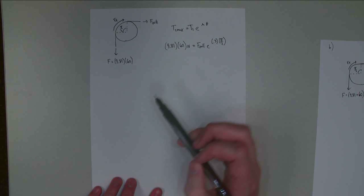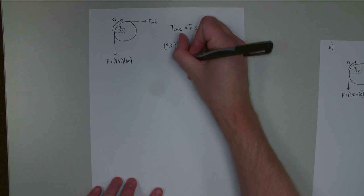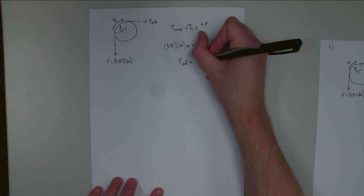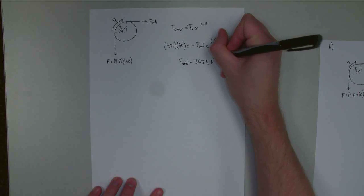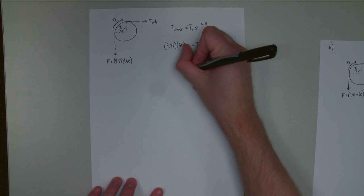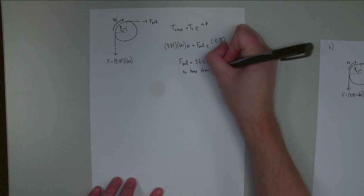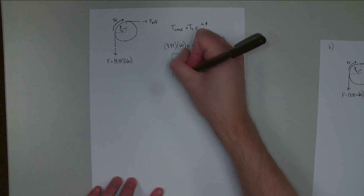Now we need to solve for F pull. Much of the same numbers, but we've switched those two values, T1 and T2. If we solve for this, we find F pull is going to be equal to 367.4 newtons. And this is to keep it from falling. This is for part B.